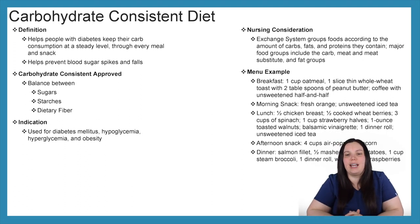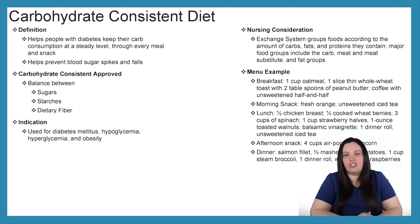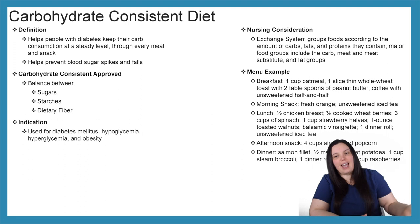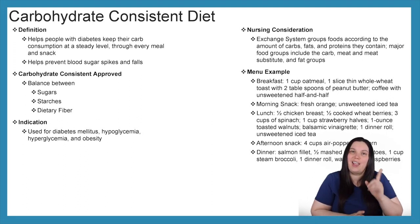A menu example for breakfast includes one cup of oatmeal, one slice of thin whole wheat toast with two tablespoons of peanut butter, and coffee with unsweetened half and half. A morning snack could be a fresh orange or unsweetened iced tea. Lunch includes half a chicken breast, wheat berries, spinach, strawberry halves, toasted walnuts, balsamic vinaigrette, and a dinner roll. An afternoon snack is four cups of air-popped popcorn. Dinner includes a salmon filet with mashed sweet potato, steamed broccoli, a dinner roll, water, and raspberries.